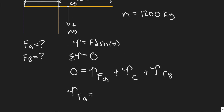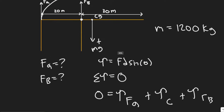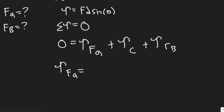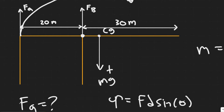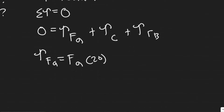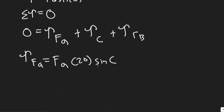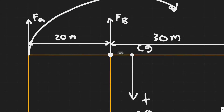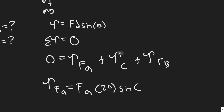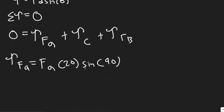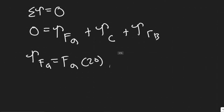The torque due to FA about that point is force times distance times sine of theta. The force is FA, and the perpendicular distance from the pivot to FA is 20 meters. The angle between the force direction and the lever arm is 90 degrees, and sine of 90 is one, so the torque due to FA is simply 20 times FA.